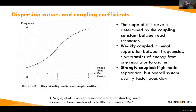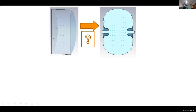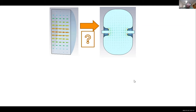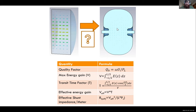Coming back to cavities — the actual linac cavities don't look like the simple pillbox cavity I've been showing. The reason their shape changes is that you want to optimize the fields across several metrics. You're looking at getting the timing right so the particle arrives at the next cavity at the right time, maximizing the energy gain the particle receives, and minimizing the chance of electrical breakdown, because that is quite problematic.